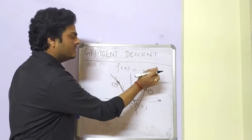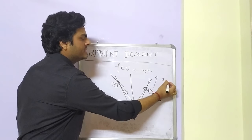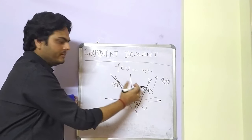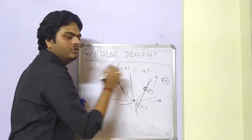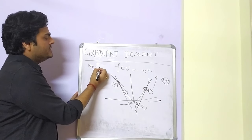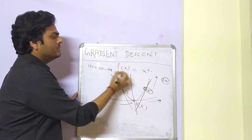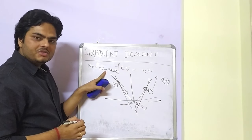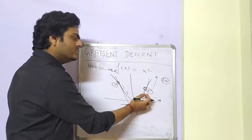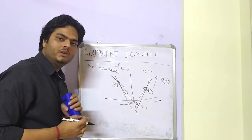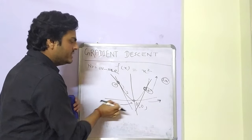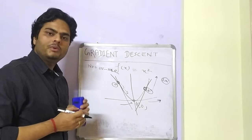The derivative of x² with respect to x is 2x. On the left side of the origin, x is negative so 2x is negative; on the right side, x is positive so 2x is positive. Referring back to the formula — new value = old value minus slope times learning rate — whenever the slope is negative the new value increases, and whenever the slope is positive the new value decreases. This is how the slope helps decide which direction to move x in order to reach the global minima.